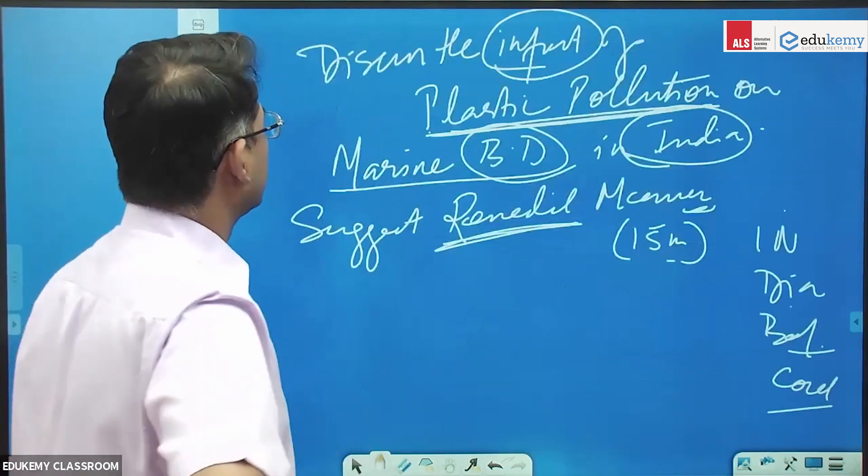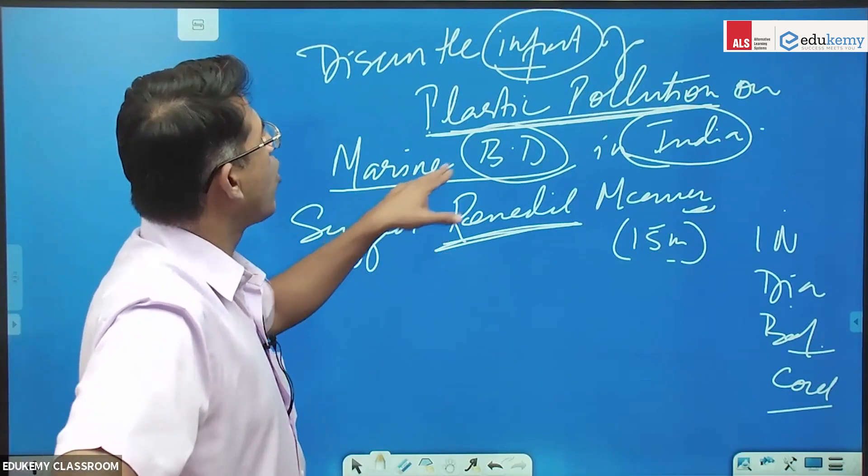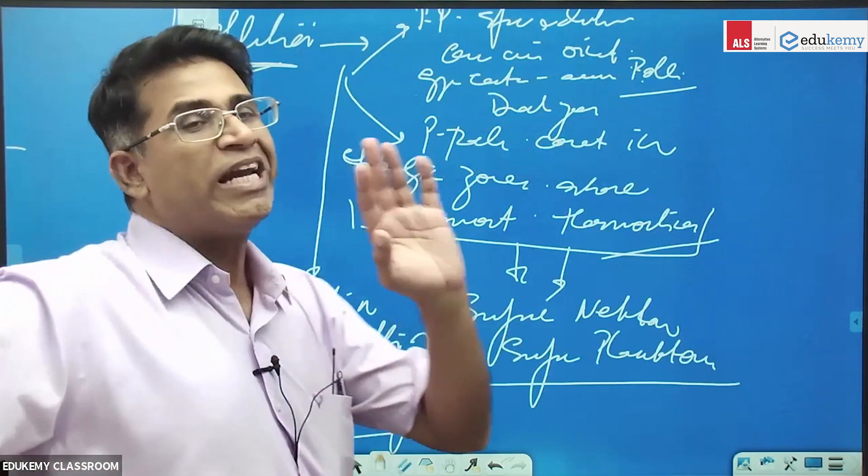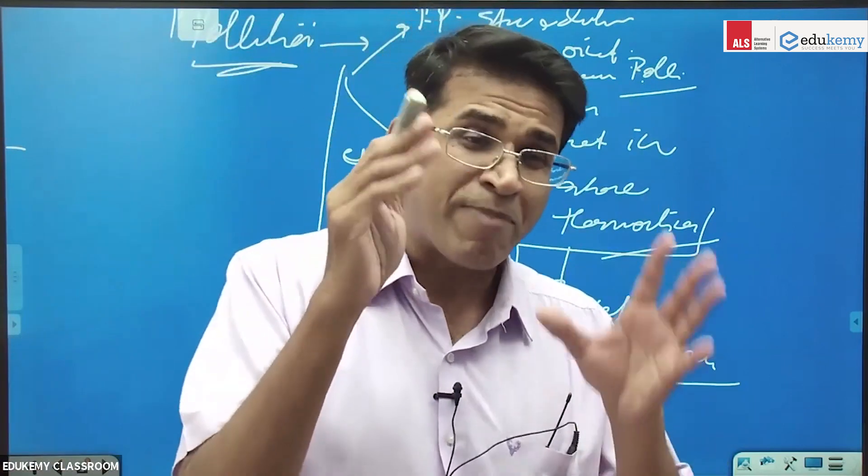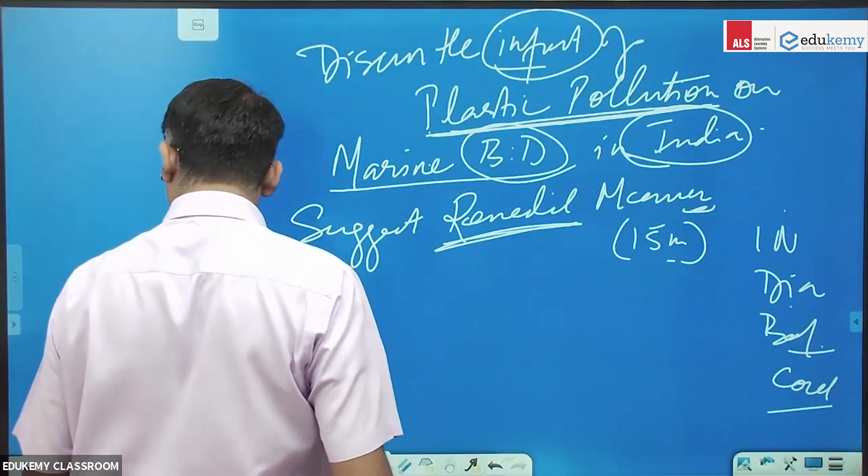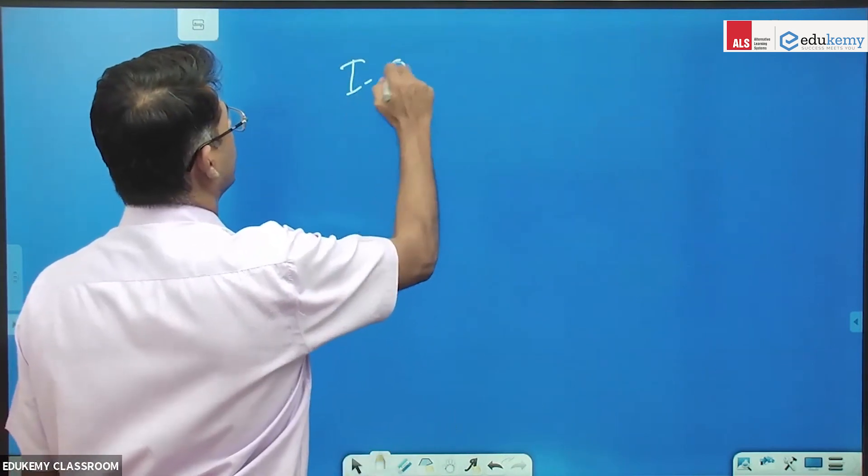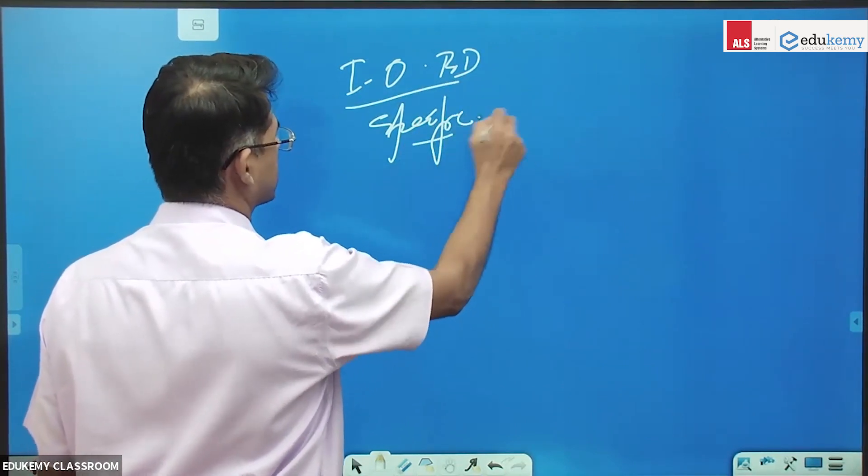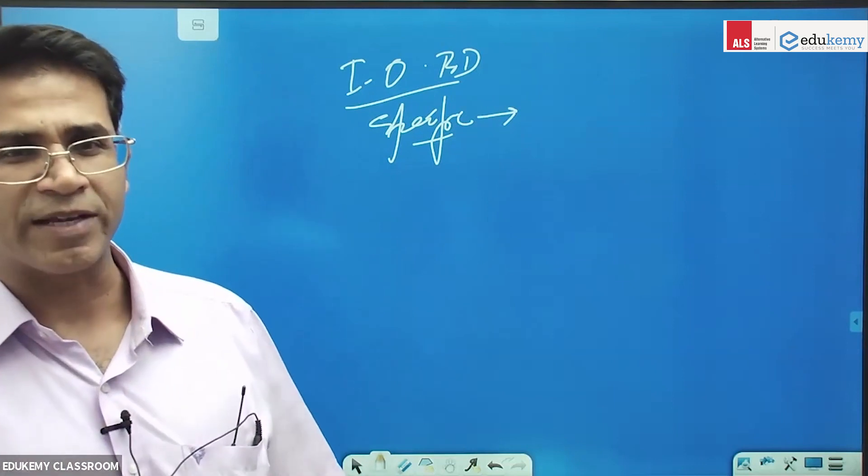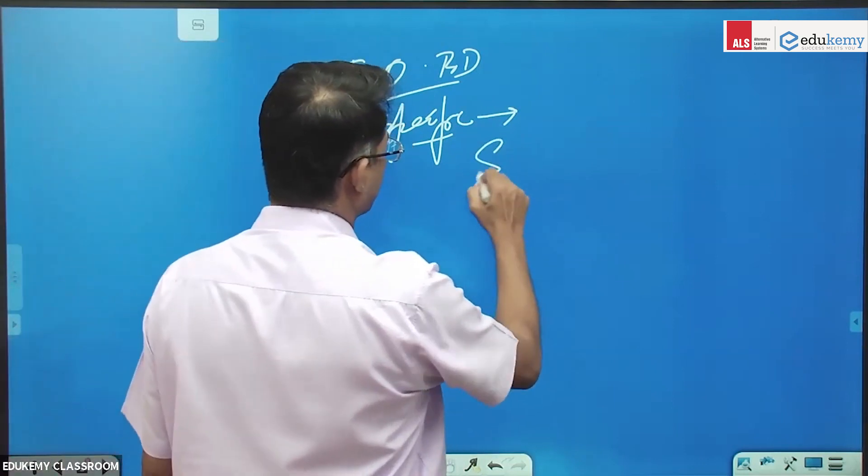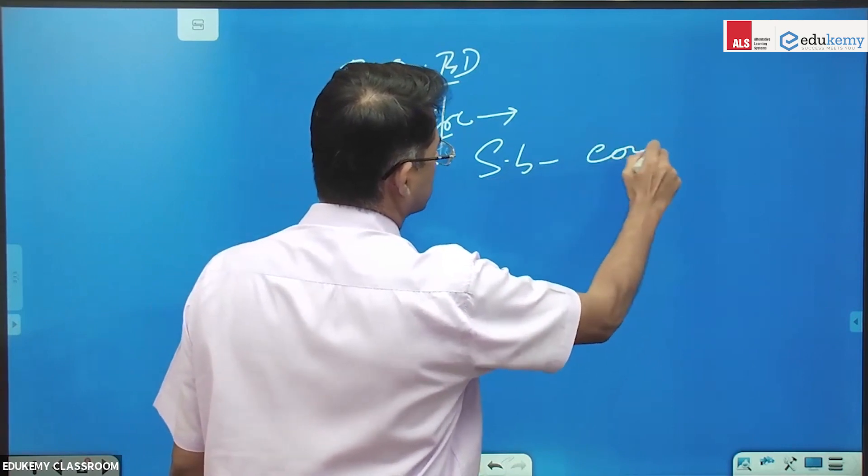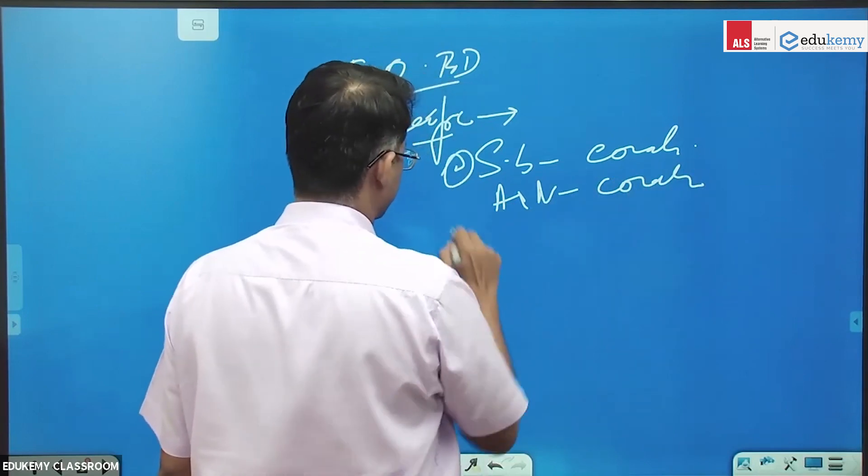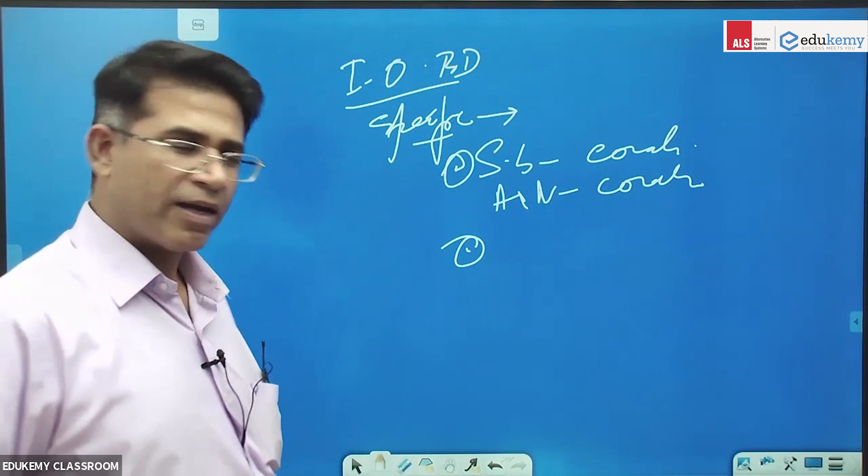Now you will try to map it with the Indian Ocean. The question was what? In India, what is the impact on marine biodiversity? Now I will tell you - in Indian Ocean biodiversity, what are the specifics that you know? Can you tell me? In the Indian Ocean biodiversity, what are the specifics? So specifics are Sundarbans corals, Andaman and Nicobar corals. What else?